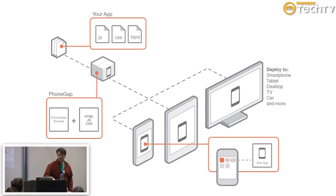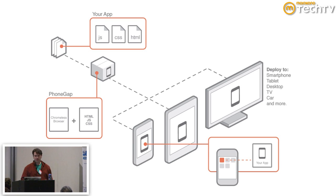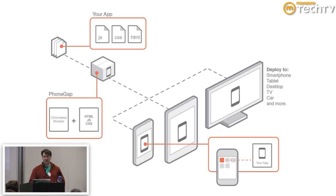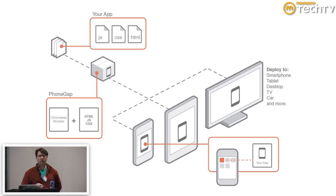Here's a complicated, simple diagram that explains what PhoneGap is. Essentially, your JavaScript, CSS, and HTML is packaged by PhoneGap into a Chromeless browser on whatever device you're developing for, and then it's deployed to the mobile device. We want to illustrate as well that the mobile device could actually be a car or a TV or a desktop computer. These are all things that are sort of on our radar for the future.